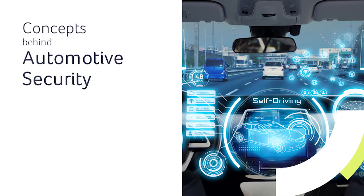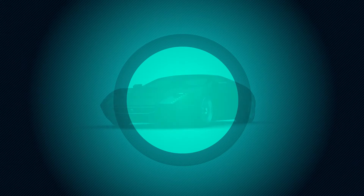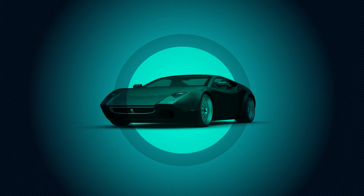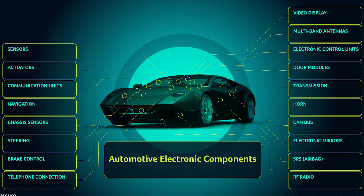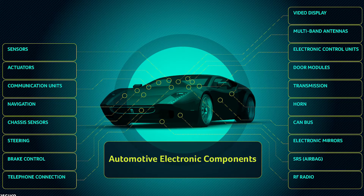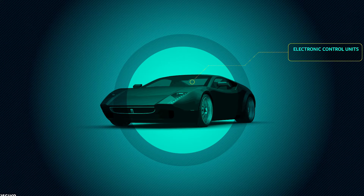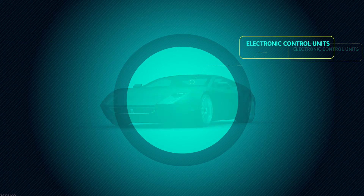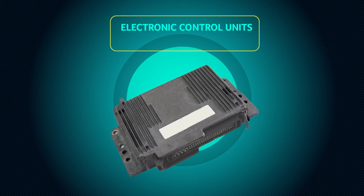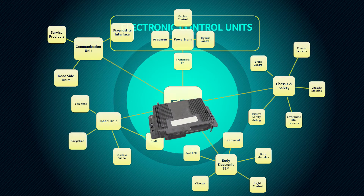First, we'll explain some concepts behind automotive security. Modern cars consist of hundreds of electronic components like sensors, actuators, communication interfaces, and others. All these components are controlled by electronic control units. These ECUs communicate amongst themselves in a network.